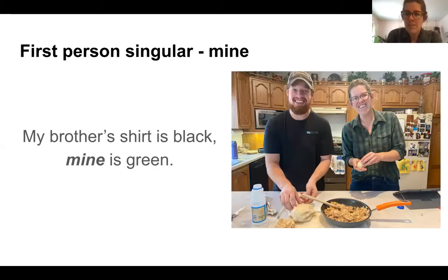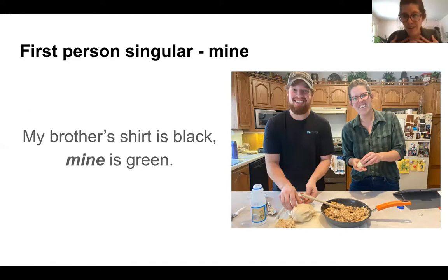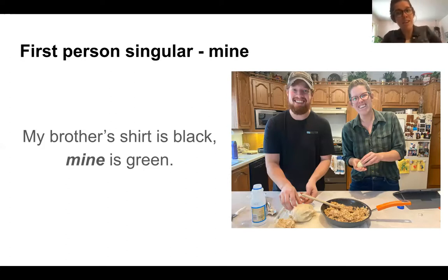The first person singular is 'mine.' For example, my brother's shirt is black. Mine is green. So the pronoun 'mine' is replacing the noun — instead of saying 'Miss Bigelow's is green,' because I'm talking about myself, we use the word 'mine,' because we're talking about my shirt, which I possess.